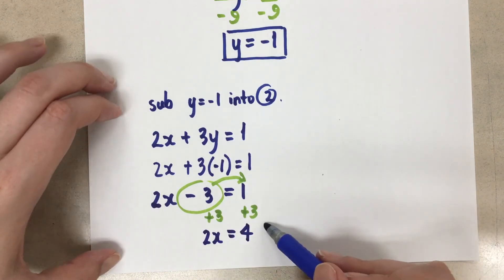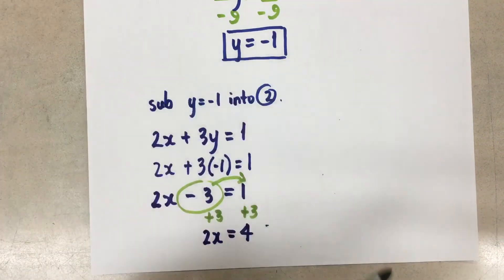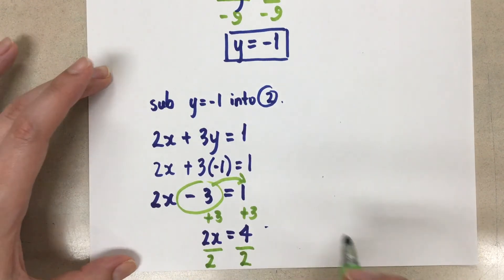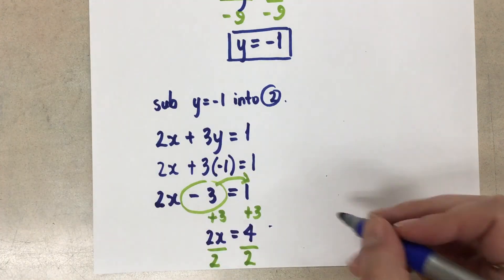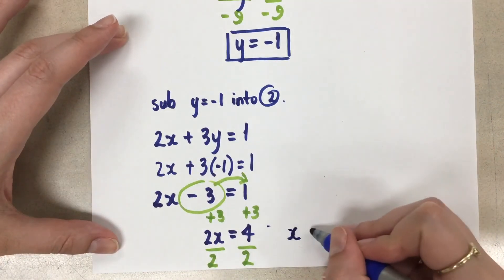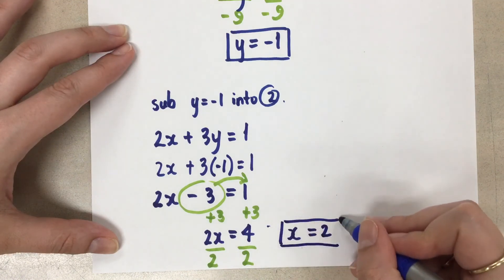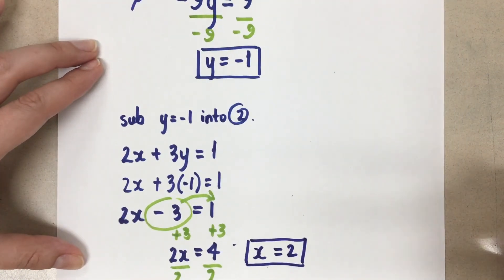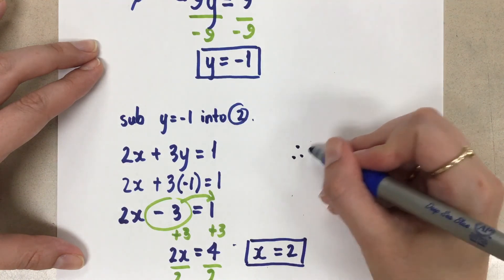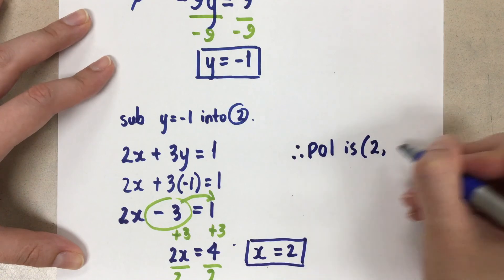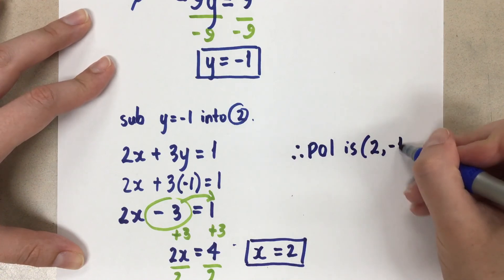And then our last step to solve for x here, divide on both sides by two. And when we do that, we're left with x equals positive two. So there's the x coordinate. So altogether, our point of intersection is x, which was two, comma y, which was negative one.